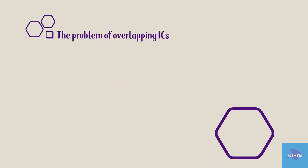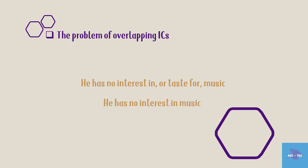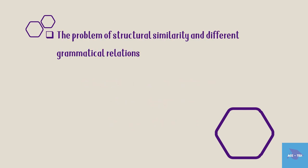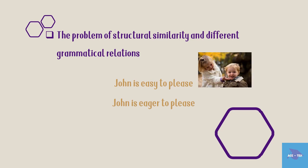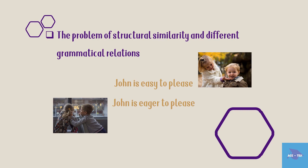Next is the problem of overlapping ICs. For example, 'He has no interest in or taste for music' means he has no interest in music and no taste for music — the word 'no' applies to both 'interest' and 'taste,' and it is not possible to show this in IC analysis. Next is the problem of structural similarity with different grammatical relations. Consider: 'John is easy to please' and 'John is eager to please.' These two sentences are alike in their surface structure but semantically different — in the first, someone pleases John; in the second, John is pleasing someone. IC analysis cannot show this difference.